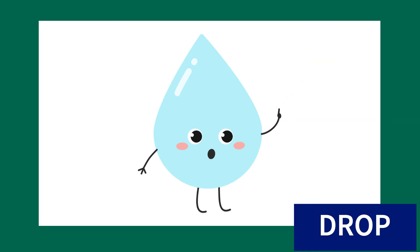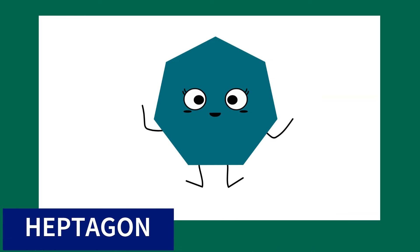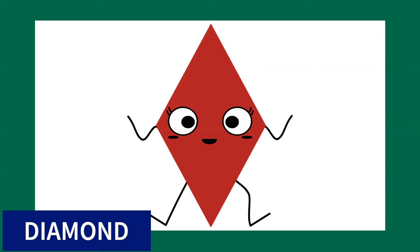Drop. This shape is called drop. Rectangle. This shape is called rectangle. Heptagon. This shape is called heptagon. Diamond. This shape is called diamond.